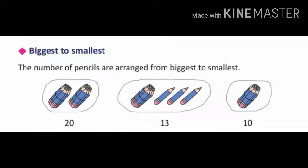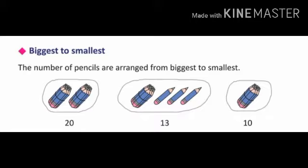The number of pencils are arranged from biggest to smallest. In the first set of pencils there are 20 pencils. It has two bundles, each bundle has 10 pencils, so totally there are 20 pencils. In the first bundle there are 10 pencils, and in the second bundle also we have 10. So after 10 you need to count 10 more — start from 11.